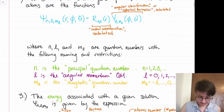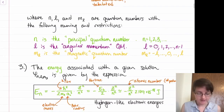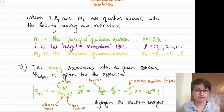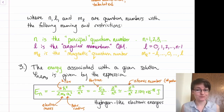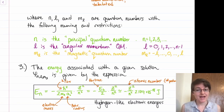Our quantum numbers have traditional names in the literature and restrictions on what values they can take. n, our principal quantum number, can be any positive integer. l is the angular momentum quantum number, and valid solutions to Schrödinger's equation always have l less than n. So n equals 3, l equals 2 is a valid wave function, but n equals 3, l equals 4 is not. l can take values from 0 up to n minus 1. m_l, our magnetic quantum number, depends on l: it takes integer values between negative l and positive l.